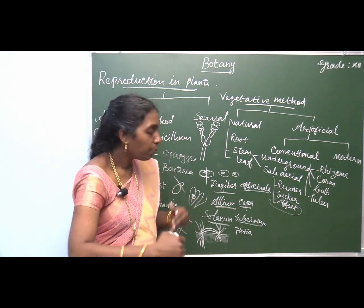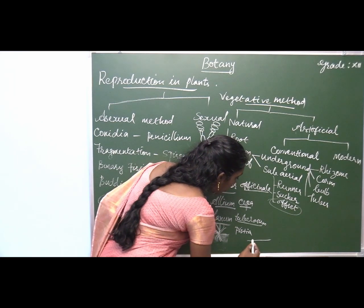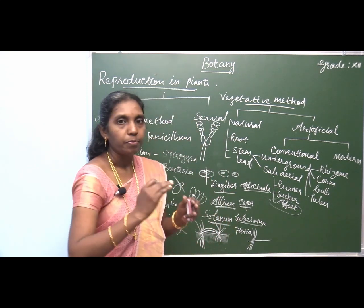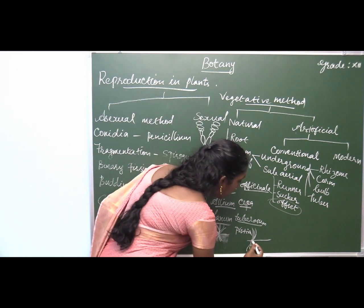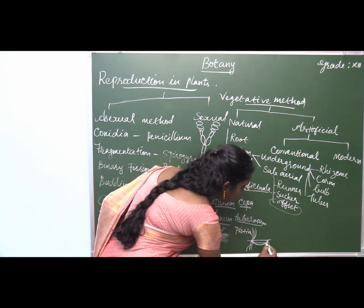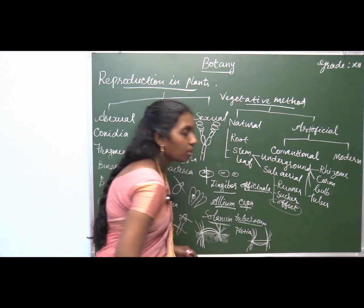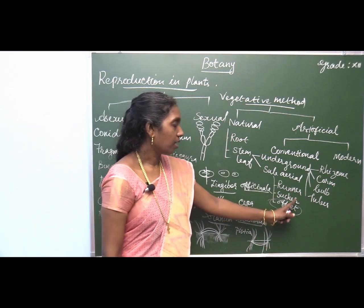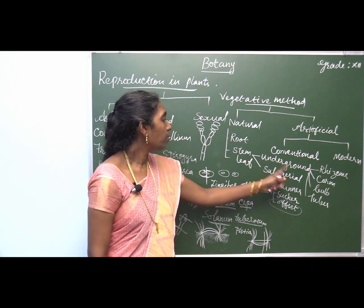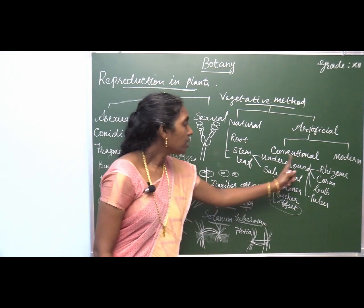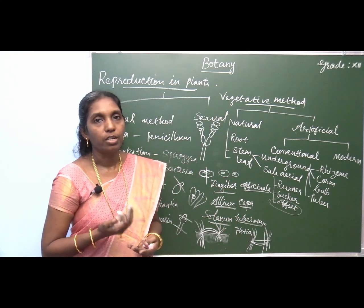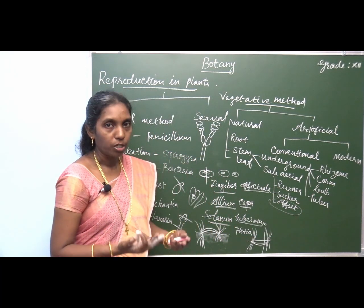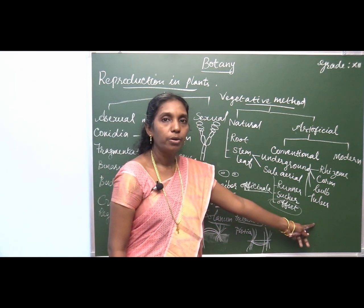Sucker — example chrysanthemum. In chrysanthemum, a similar branch is developed, called sucker. The difference is that runner is produced above the soil, but sucker develops below the soil. A long slender branch develops below the soil, develops roots, and is able to grow as a new species when detached from the parental one. So runner, sucker, and offset are examples of sub-aerial modification, and these parts are called reproductive propagules.